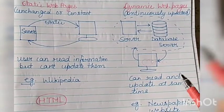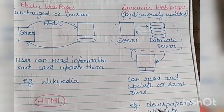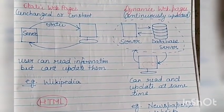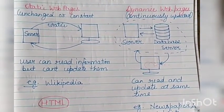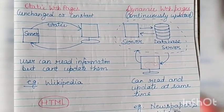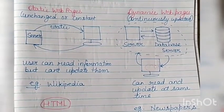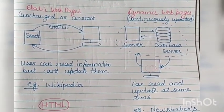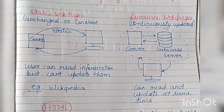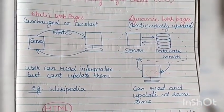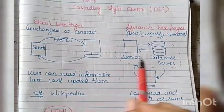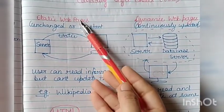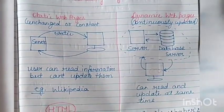So these web pages are called dynamic web pages, and they are made with the help of DHTML, that is Dynamic Hypertext Markup Language. An example of DHTML is a newspaper's website, where there is new information all the time. These websites should be updated every day, every time. So these web pages are known as dynamic web pages.